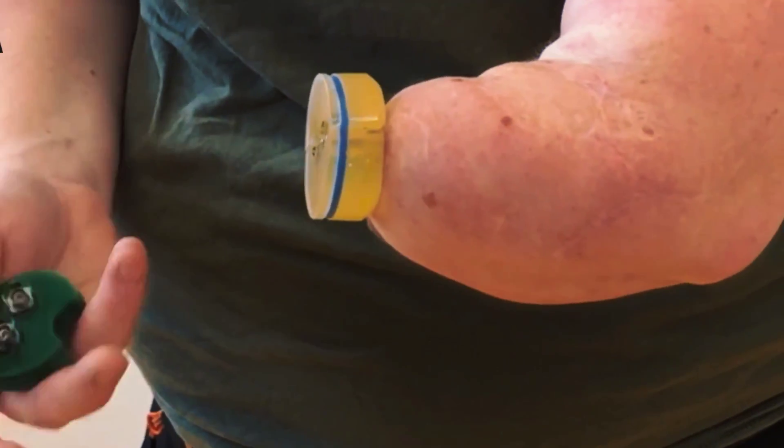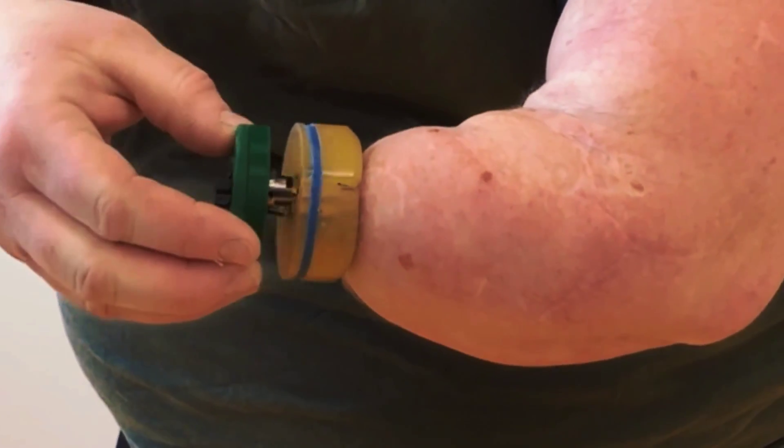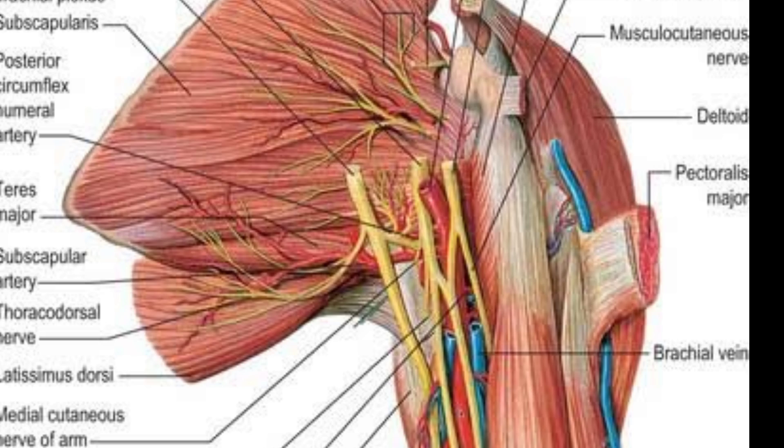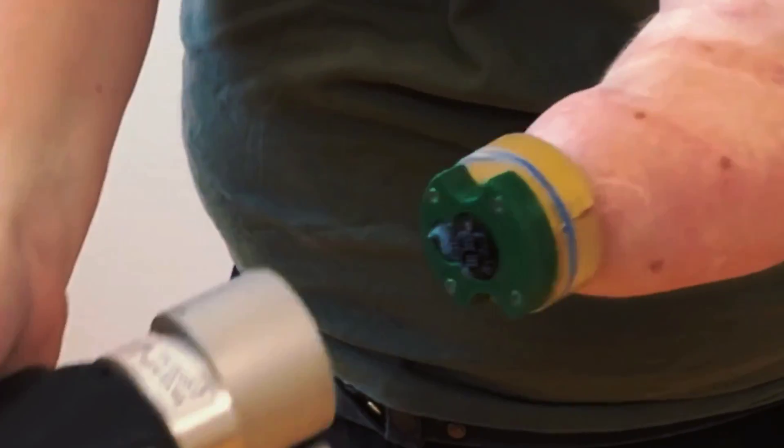To achieve this, they combined two innovative techniques: osseo-integration and targeted muscle re-innervation. Osseo-integration is the process that connects bones to the electrodes implanted in the nerves and muscles. This creates a direct link between the skeleton and the prosthesis, which improves stability, comfort, and durability.